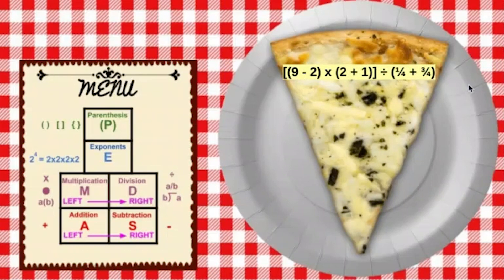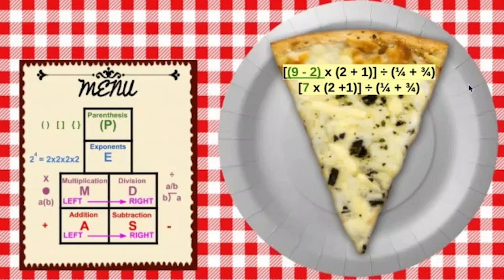Let's go to the next problem. Before you freak out — I know we have parentheses, brackets, and fractions — just take a deep breath. It'll be fine. Think about what you're going to do first; hopefully you've paused and tried it. So now let's go through the problem. We have multiple sets of parentheses. Let's start with the bracket section and solve one at a time. You can solve multiple parentheses at once as long as they don't overlap and you're not changing the order. But be very careful if you do. Let's solve the bracket section first: 9 minus 2 is 7.